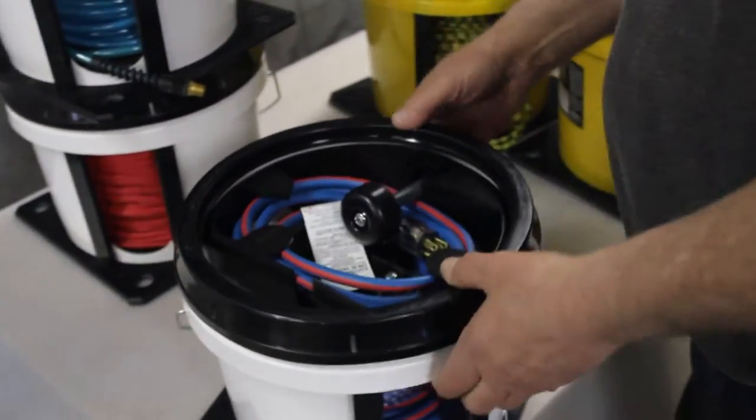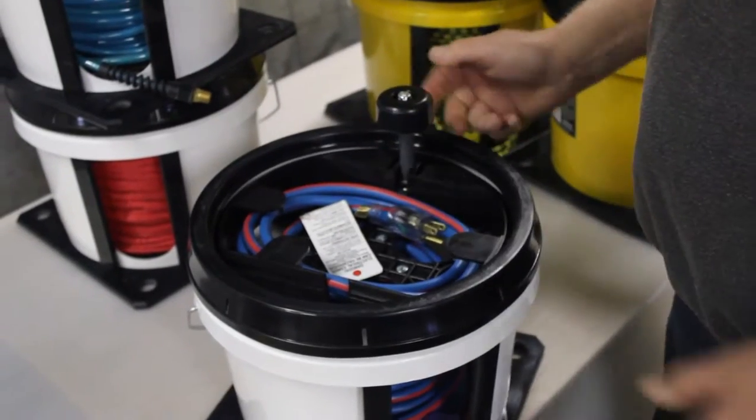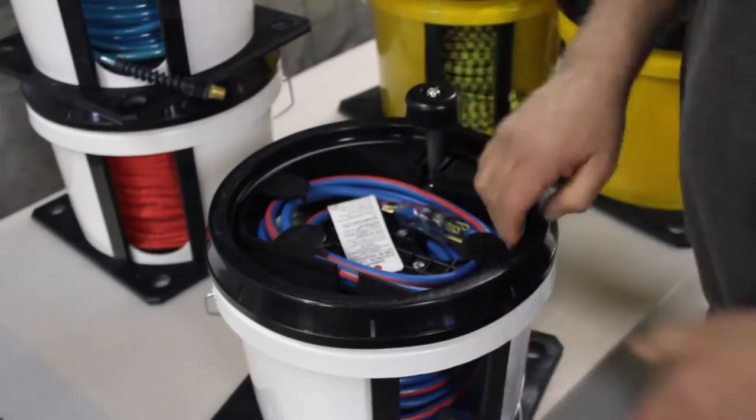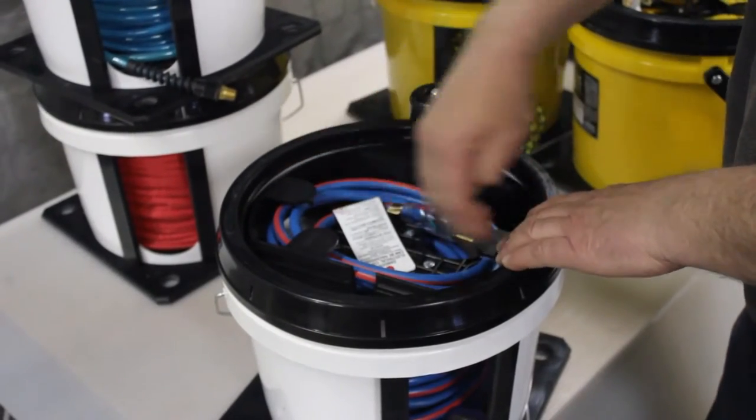Let me show you the standard features for all of our quick winders. All of the units have a fold down handle, they've got a top tray in the top of the spool for handling your working tail.